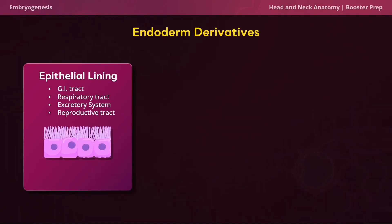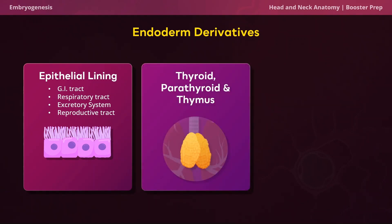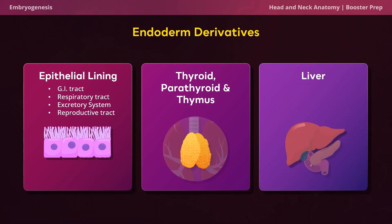Now we are moving on to the endoderm derivatives, where we start off with the epithelial lining for the GI tract, the respiratory tract, the excretory system, and the reproductive tract. And then we have the thyroid, the parathyroid, and the thymus, and also the liver.